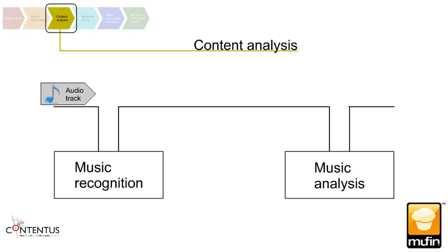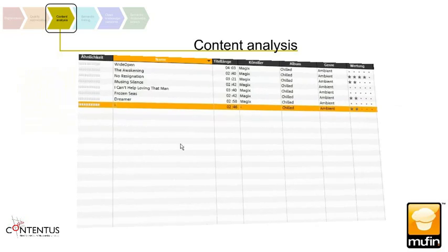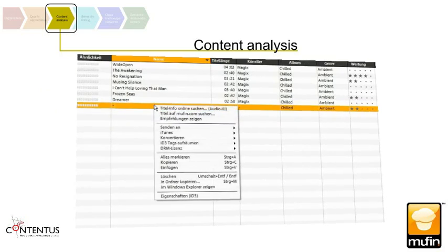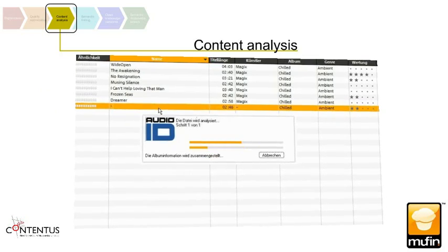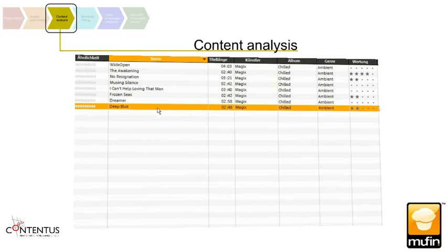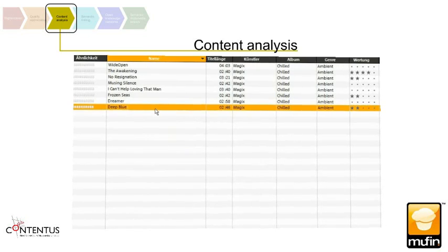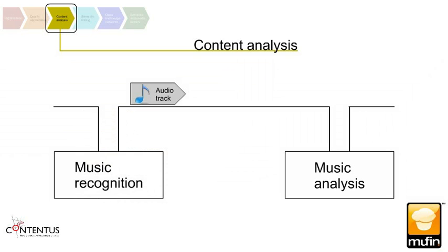If information such as artist or album is unknown, AudioID can be used to unequivocally identify the musical piece and retrieve the respective metadata automatically using a server connection, without any manual effort.